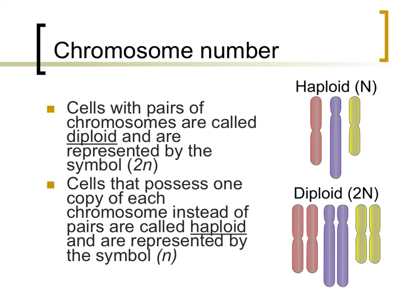Cells that have pairs of homologous chromosomes are referred to as diploid. The prefix 'di' means two, and ploidy refers to the number of each chromosome that an individual possesses. Gametes, or sex cells, on the other hand, are referred to as haploid. The prefix 'hap' looks like the word 'half' — in haploid cells, there are only half of the typical number of chromosomes that an individual has: 23 chromosomes in humans, instead of 23 pairs.